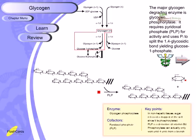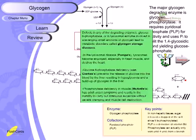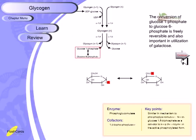Phosphorylase can only work until four units from a branch — that is a limitation of glycogen phosphorylase. This enzyme can only act from the non-reducing end of glucose, it can only attack and break alpha-1,4 linkages and cannot break alpha-1,6 linkages, and its activity will only work until four units from a branch of glycogen.